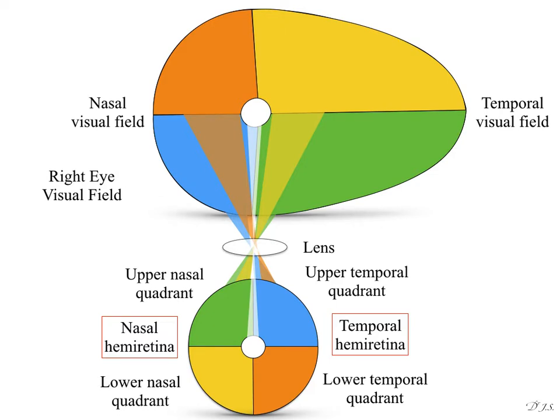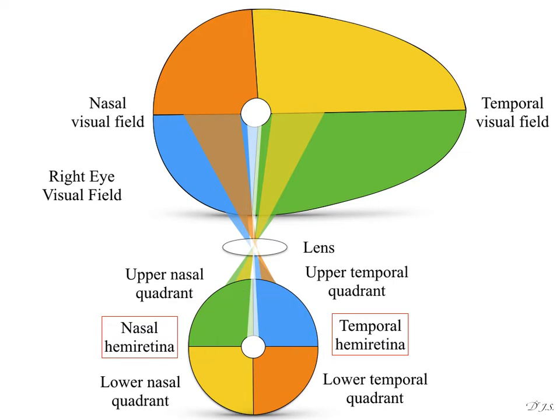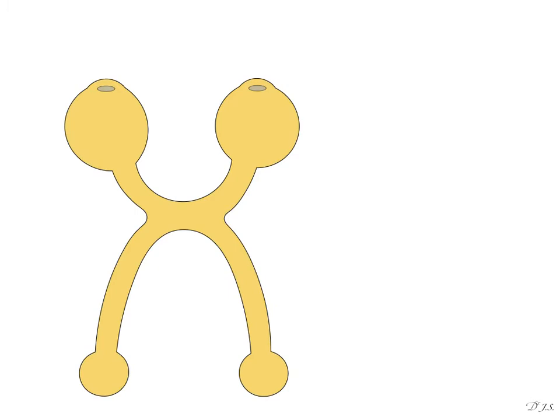In the next diagrams, I will show the nasal and temporal hemiretina and upper and lower hemiretina. This whole concept will enable us to understand the visual field defects.